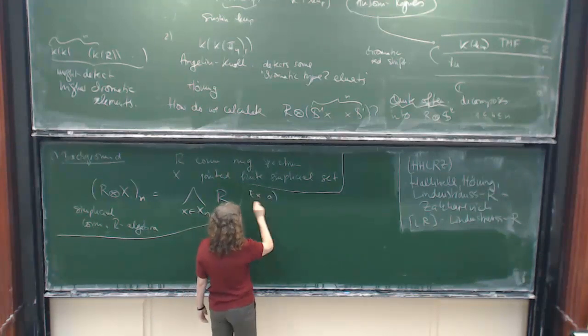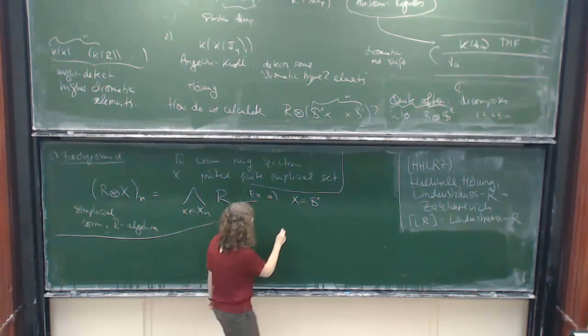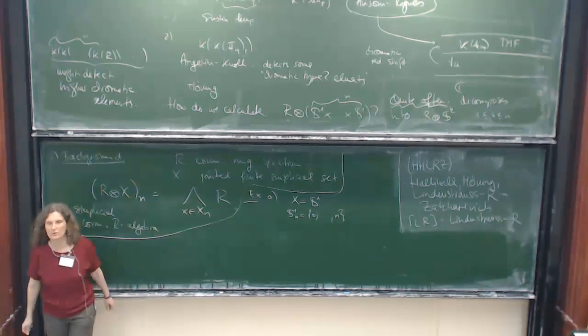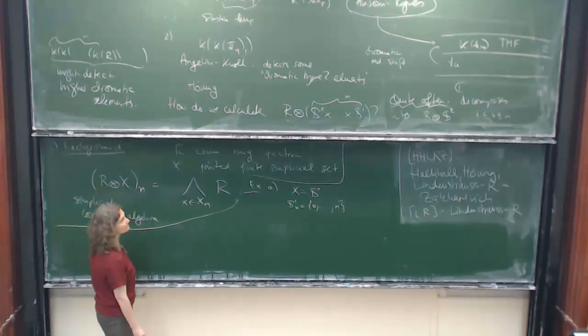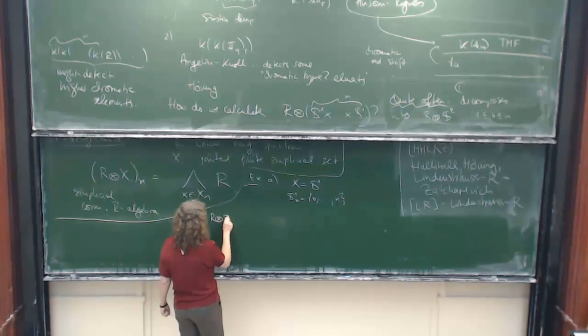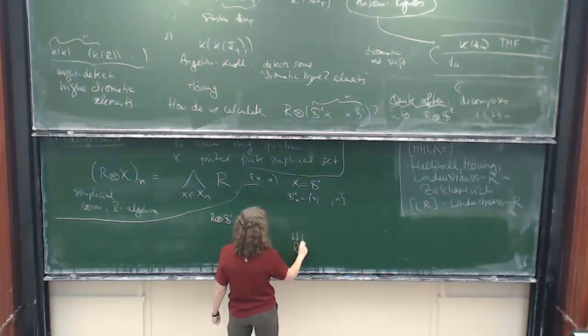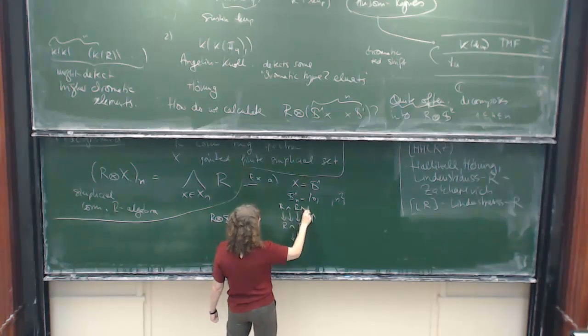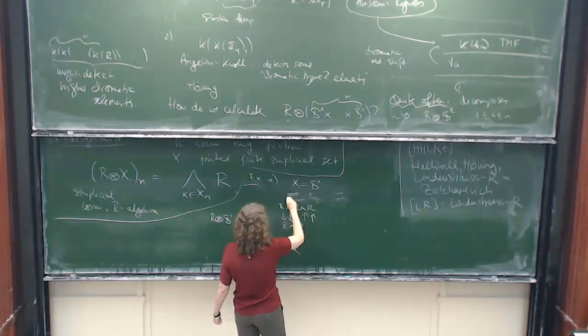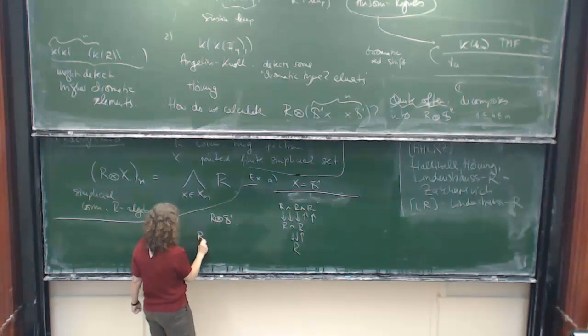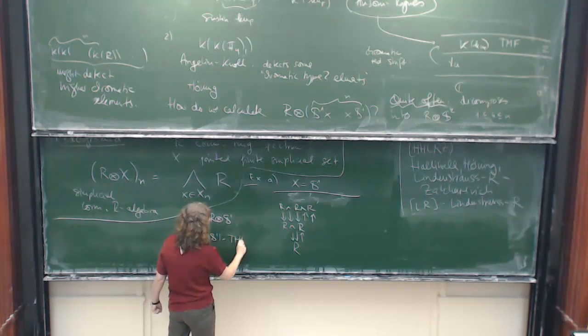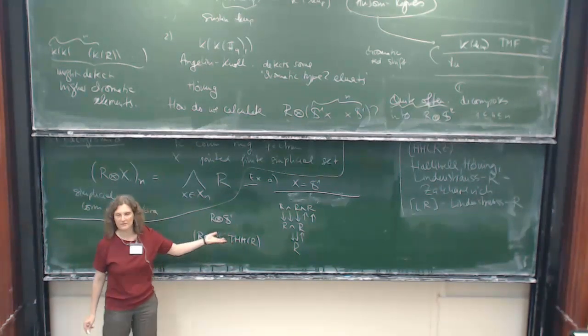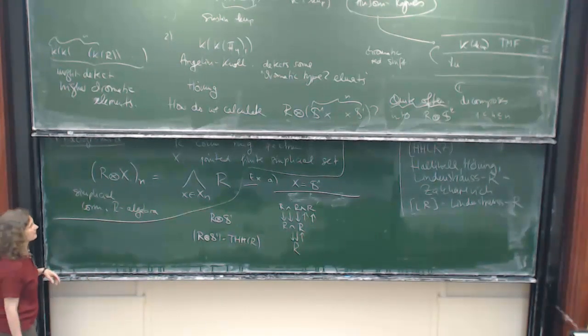So if I take the circle, then this has n plus 1 points. In the standard model, you can take more complicated simplicial models, but you don't have to. And if you take the easiest one, what you actually get is R tensor S1 is just the simplicial thing that you get by writing down the standard Hochschild complex and replacing tensor products with smash products. And so on. So this continues here. So if you take the geometric realization, then this is a model of THH of R, if you mumble co-fibrant in something, but this is the right thing.